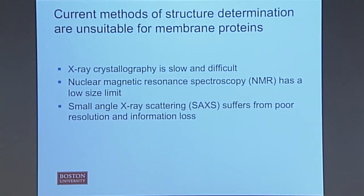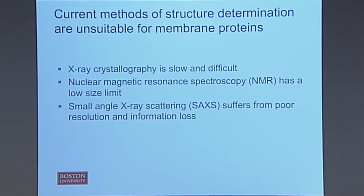X-ray crystallography is the gold standard — it produces the highest quality data most consistently — but it's very slow and difficult. Part of the sample preparation requires producing very well-ordered protein crystals with very few impurities, which is a difficult task with no generalized approach; it's very empirical. Another major method is nuclear magnetic resonance spectroscopy, or NMR. There's no crystallography step, but it has a very low size limit on the proteins you can study, which is a very large drawback.